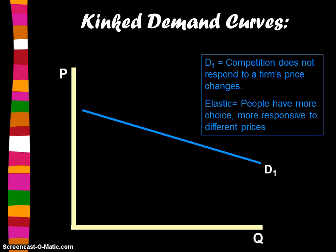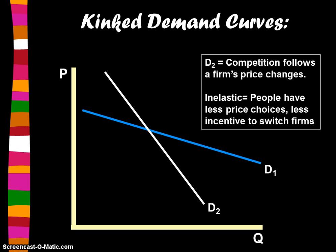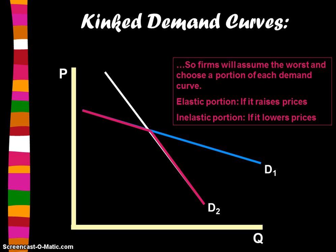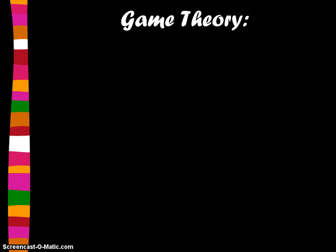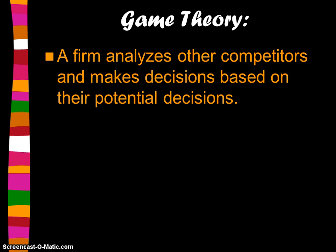Demand curve D1 represents when competition does not respond to a firm's price changes — demand is elastic, meaning people have more choices and are more responsive to different prices. D2 represents an inelastic demand curve, when competition follows a firm's price changes. Oligopolistic firms assume the worst and choose a portion of each demand curve for the worst-case scenario — elastic if they raise prices, inelastic if they lower prices. Because of those kinked demand curves, many firms engage in game theory.